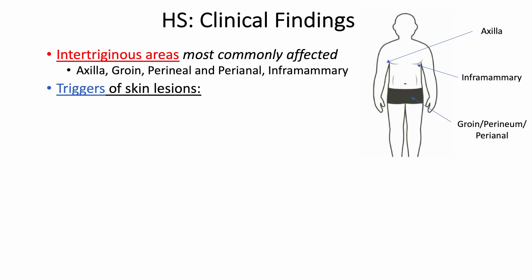There are specific triggers for these skin lesions. Menstruation seems to be one of them, as symptoms fluctuate with the menstrual cycle. Stress is another trigger — increased stress can increase development of skin lesions. Excessive sweating is another, as it can increase blocking of hair follicles in areas like the armpits and lead to more skin lesions. Weight gain is also a trigger, related to both hormonal changes and increased skin-on-skin contact.